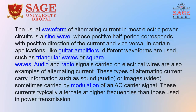Alternating currents produce a waveform — many types of waveforms. For example, a sine waveform, a triangle waveform, a square waveform. The sine waveform is produced whenever a positive half period corresponds with the positive direction of the current, and vice versa. Applications of the sine waveform include guitar amplifiers. Different waveforms such as triangular and square waveforms are used for audio and radio signals, and are also carried on electrical wires as examples of alternating current.